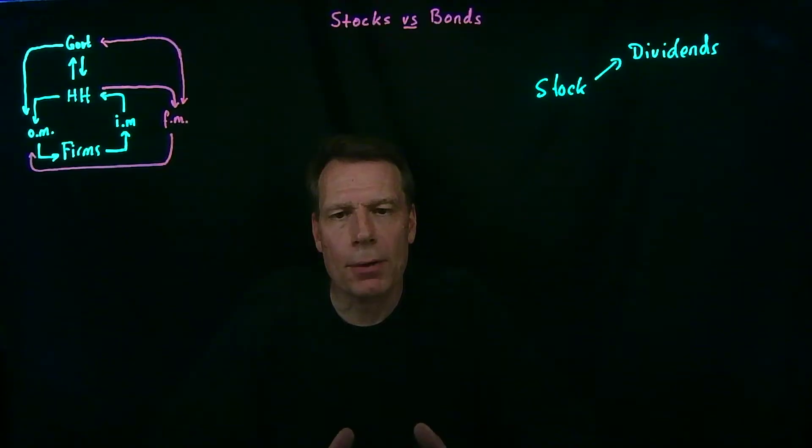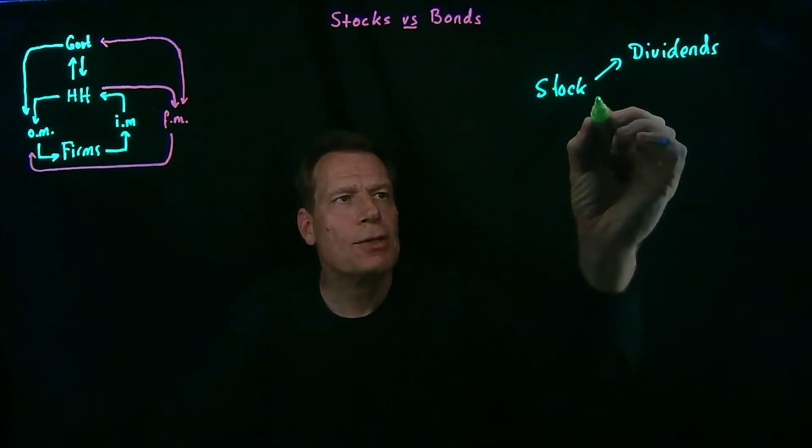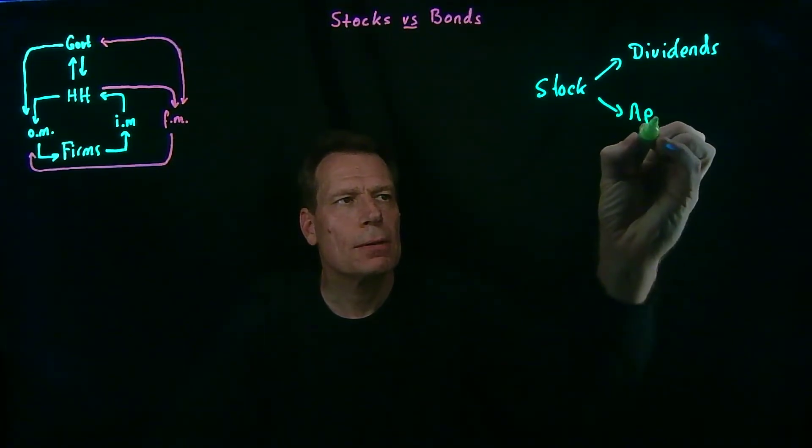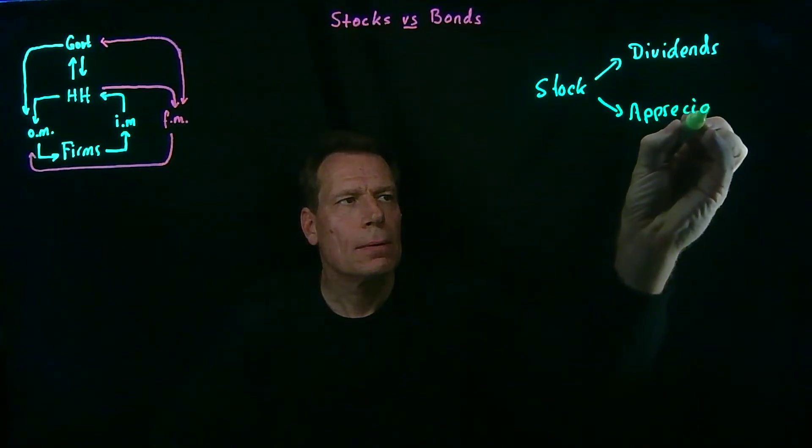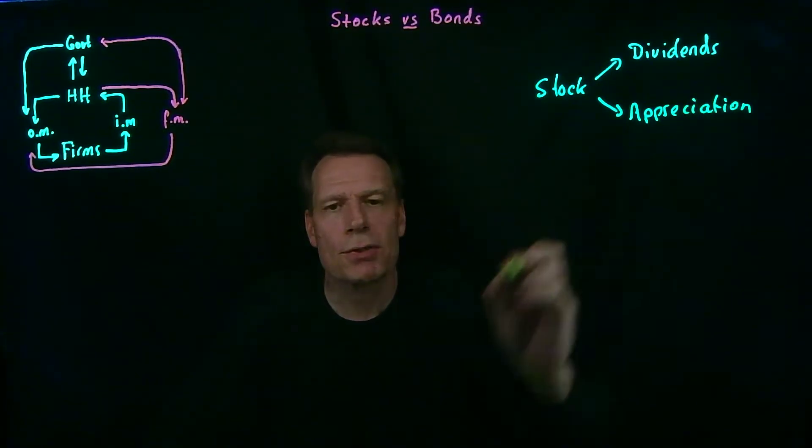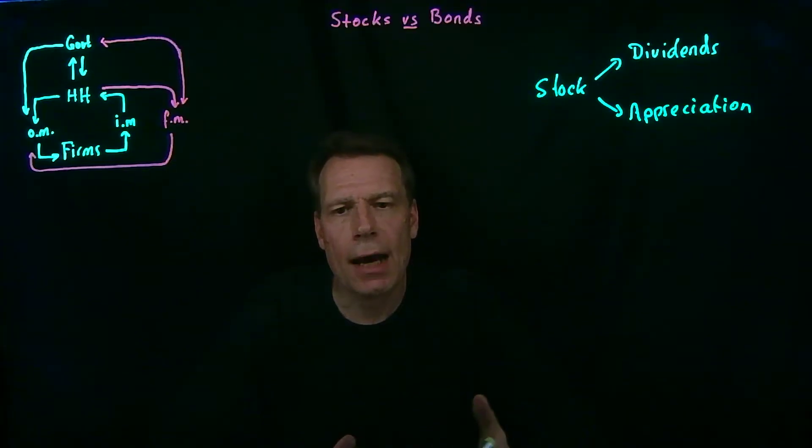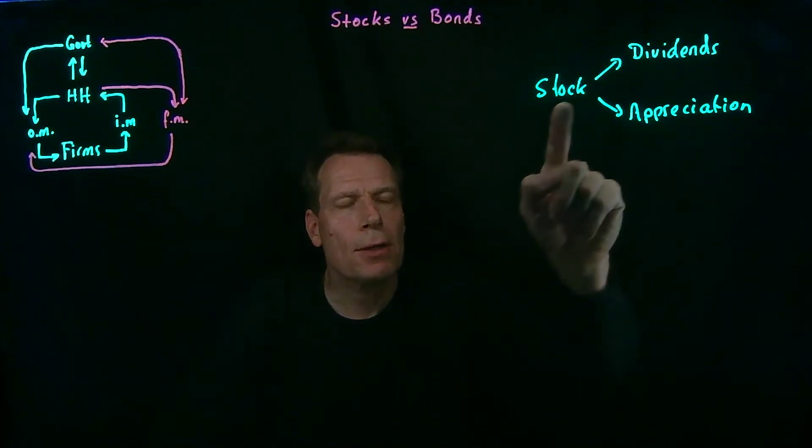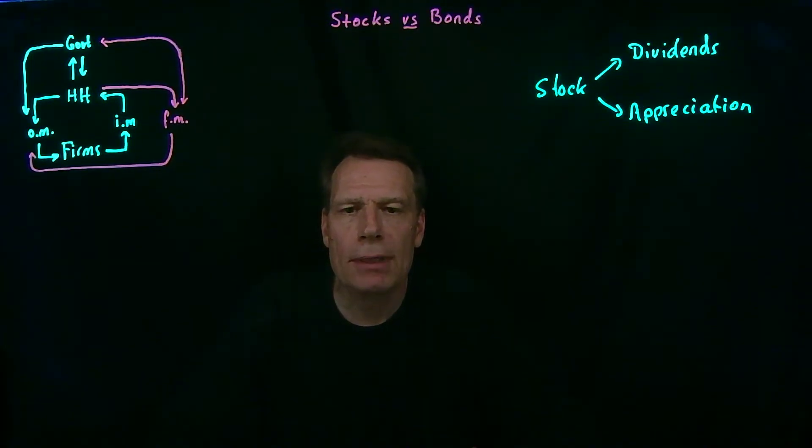Now the second way to make money by holding a stock is to cash in on the appreciation of the stock. If the stock increases in value, you can sell it at a higher price than what you paid for it and make a profit. So those two ways of making money on stocks implies a particular rate of return for stock investments.